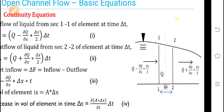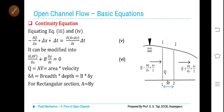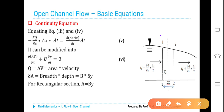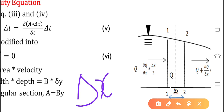Now let us consider an open channel in which two sections are taken — section 1-1 and section 2-2. Let the distance between section 1-1 and section 2-2 be very small, delta x. Let Q be the discharge of the flow, and let capital A be the area of the section between 1-1 and 2-2.